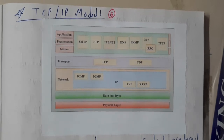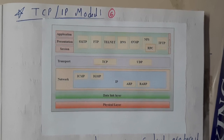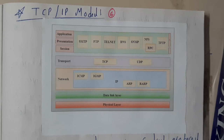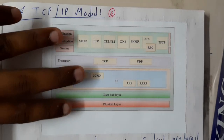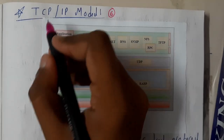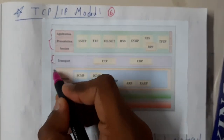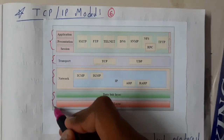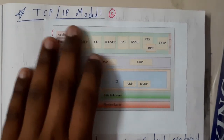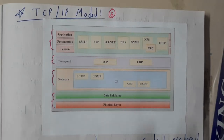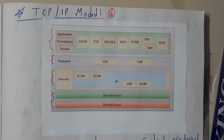In this lecture, we'll be going through the model of TCP/IP. In the previous lecture we went through the OSI model. The TCP/IP model is similar but combined — it has only four layers, where the bottom two OSI layers are merged into one.